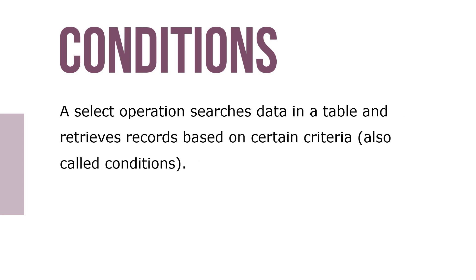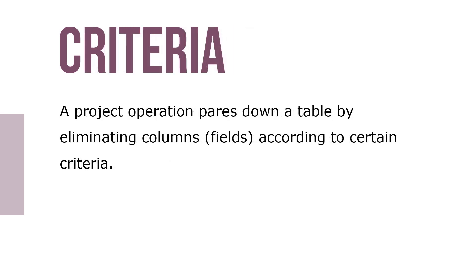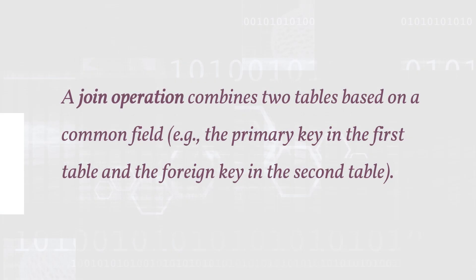A select operation searches in a table and retrieves records based on certain criteria, also called conditions. A project operation pages down a table by eliminating columns or fields according to certain criteria. A join operation combines two tables based on a common field, like the primary key in the first table and the foreign key in the second table.